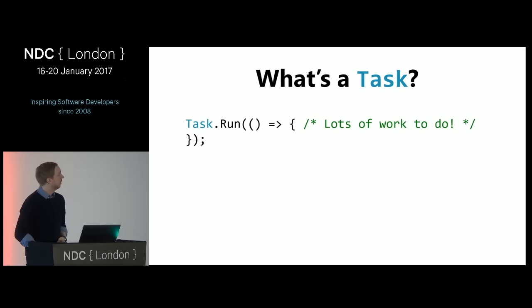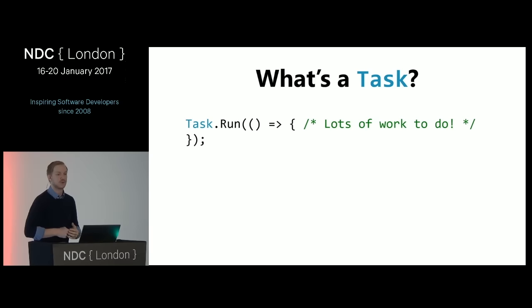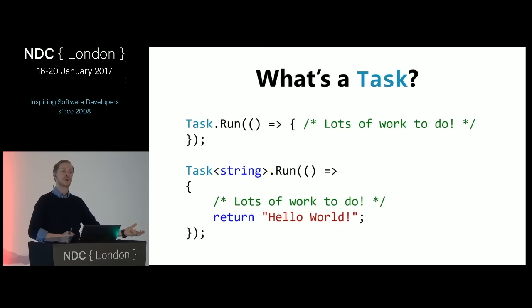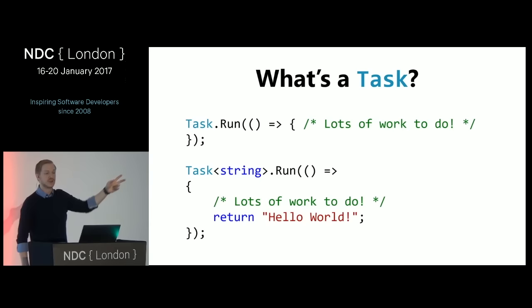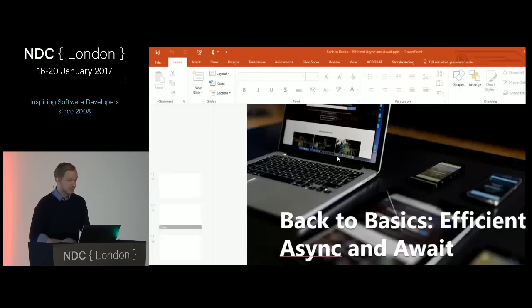If we write Task.Run with an anonymous method, we can start a lot of work on what will most likely be a separate thread. When we talk about tasks, we don't want to talk about different threads specifically, because we don't always know where that is running. What I don't want you to do is go into your apps and just wrap all synchronous code in Task.Run — that's going to give you a lot of headache. We have two forms: one that just does work, and another that returns data when done.